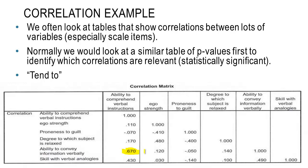We can see it's positive. So that would indicate that as the ability to comprehend verbal instructions increases, the ability to convey information verbally also tends to increase. This doesn't really surprise us. We'd expect that to happen.